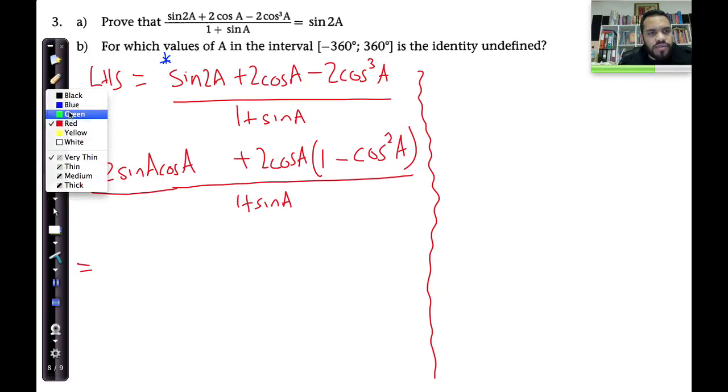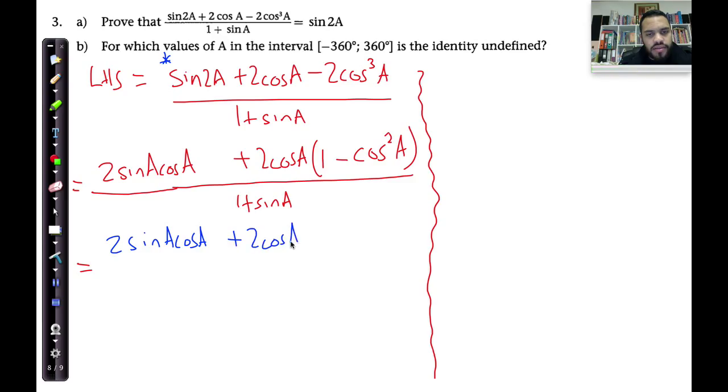I'm going to put it in blue to show everything we've already changed. 2sinA cosA, plus 2cosA, multiplied by sin²A. I'm going to put a star there because that's an identity. sin²A. All over 1 + sinA.